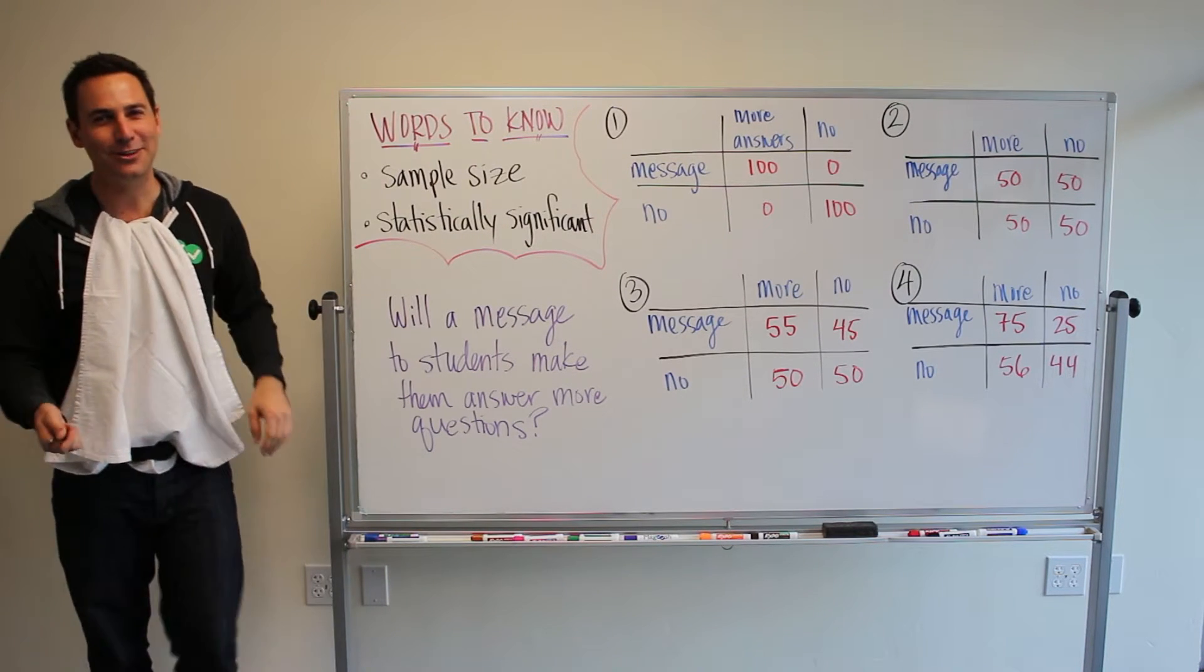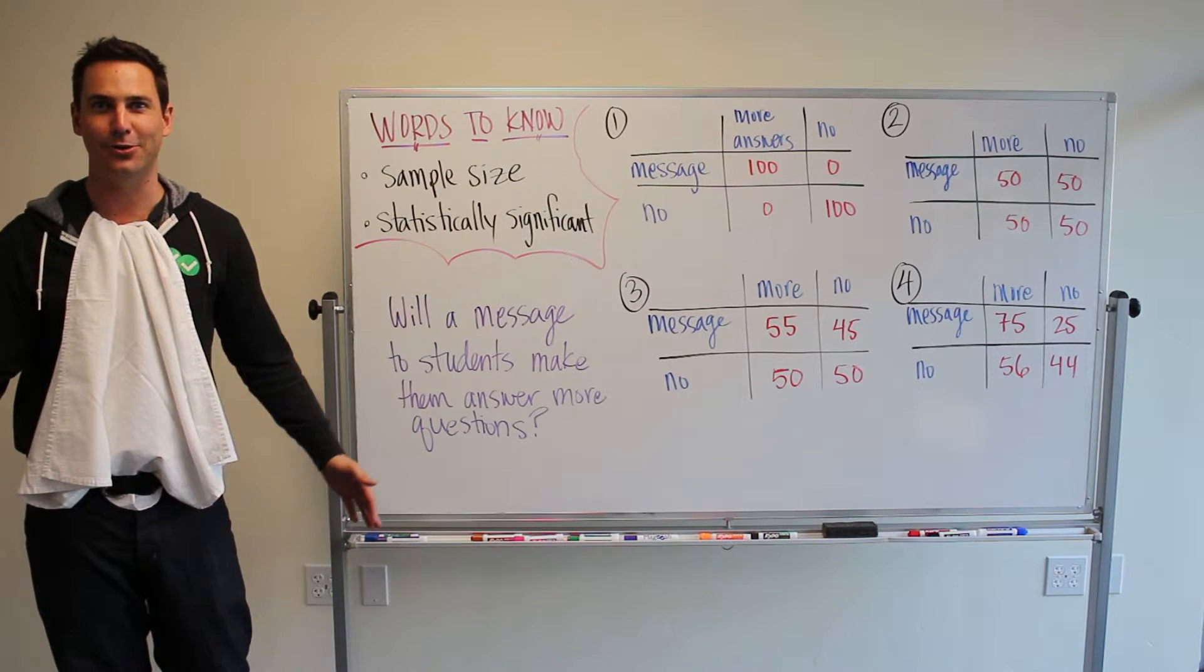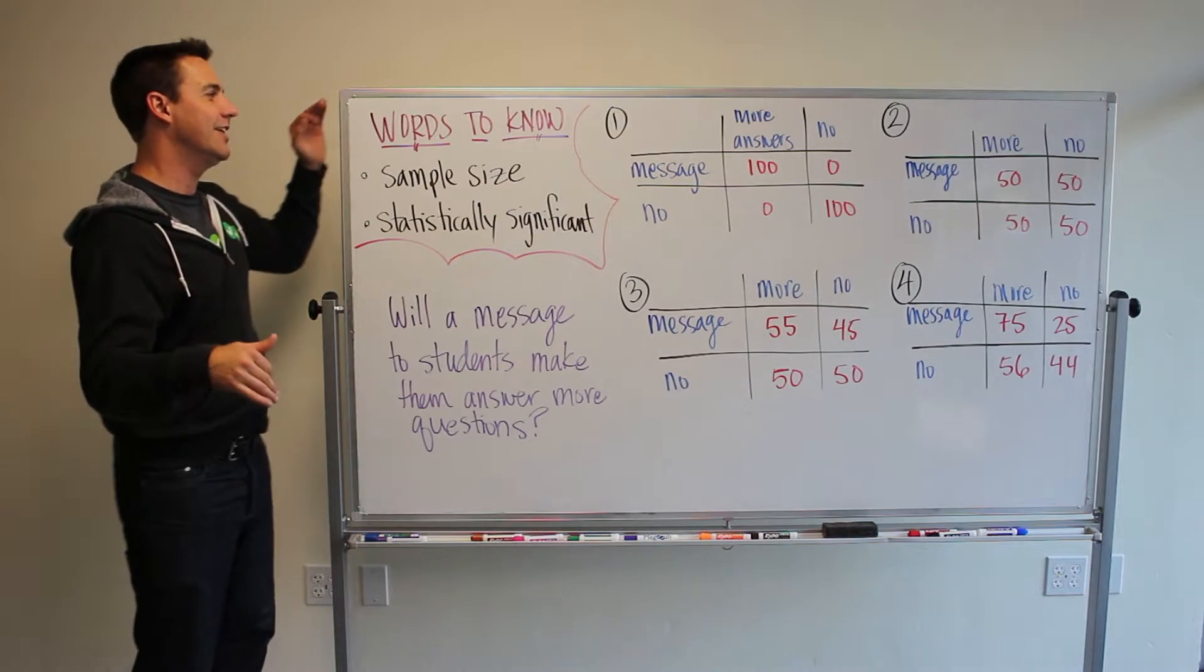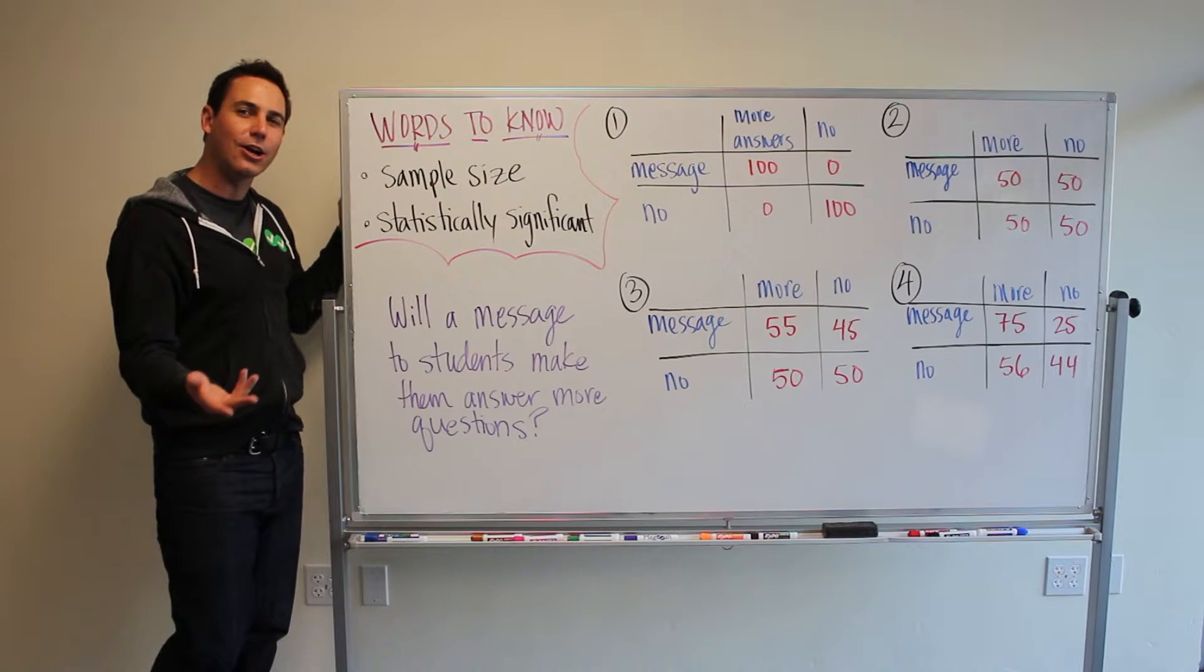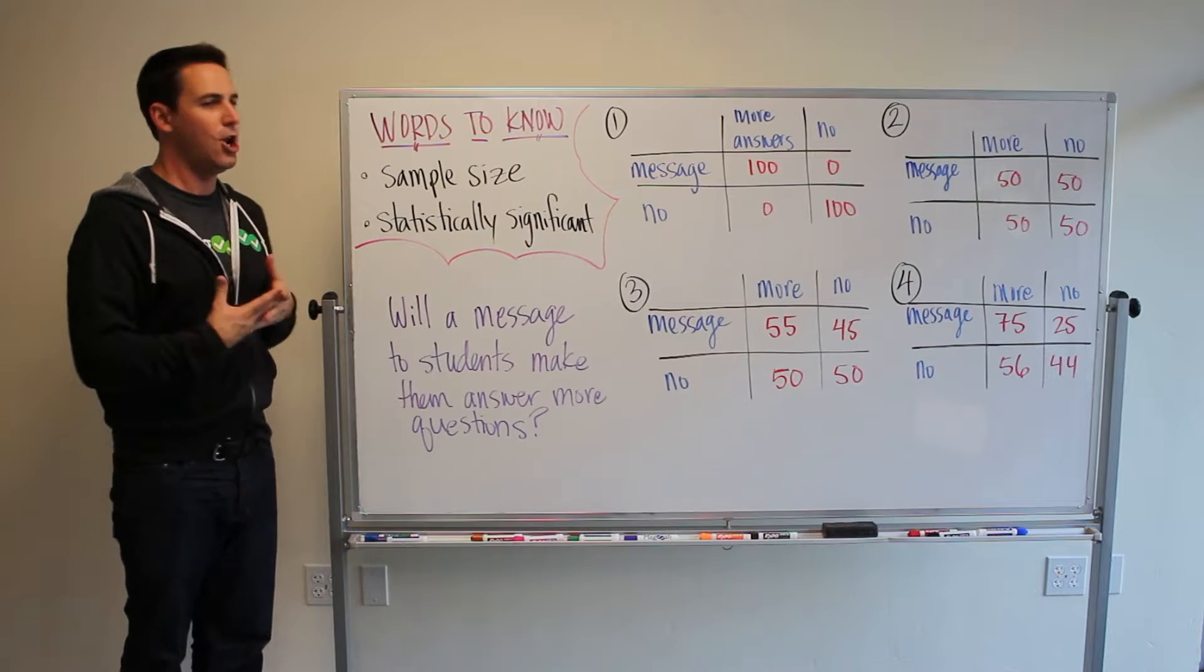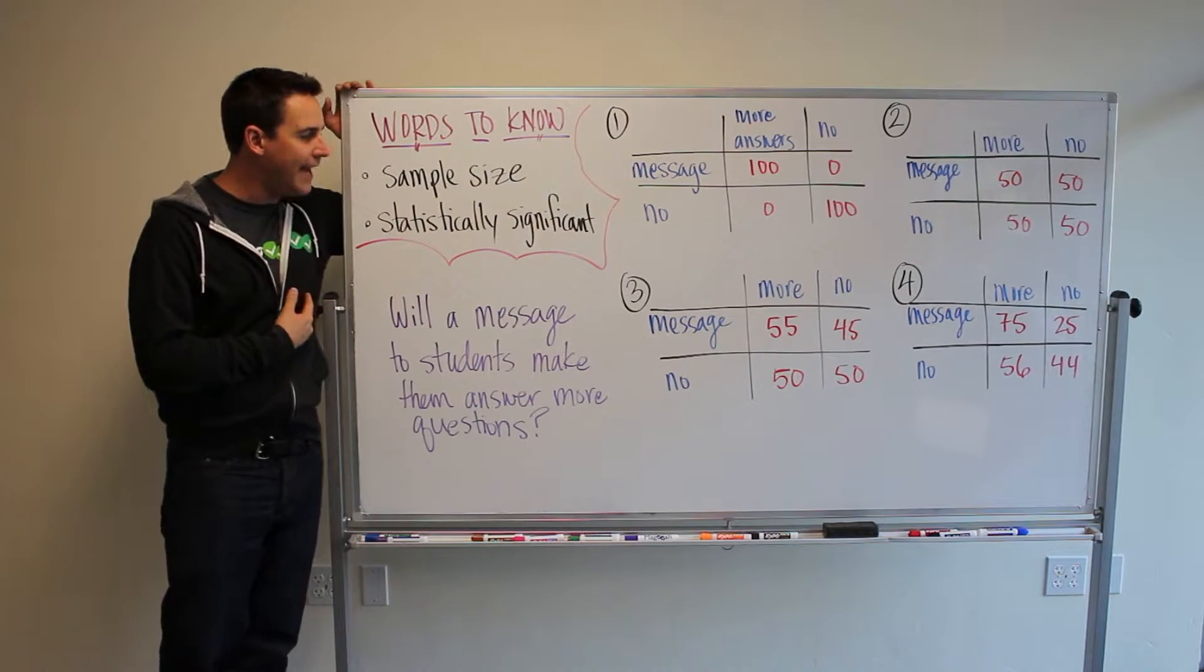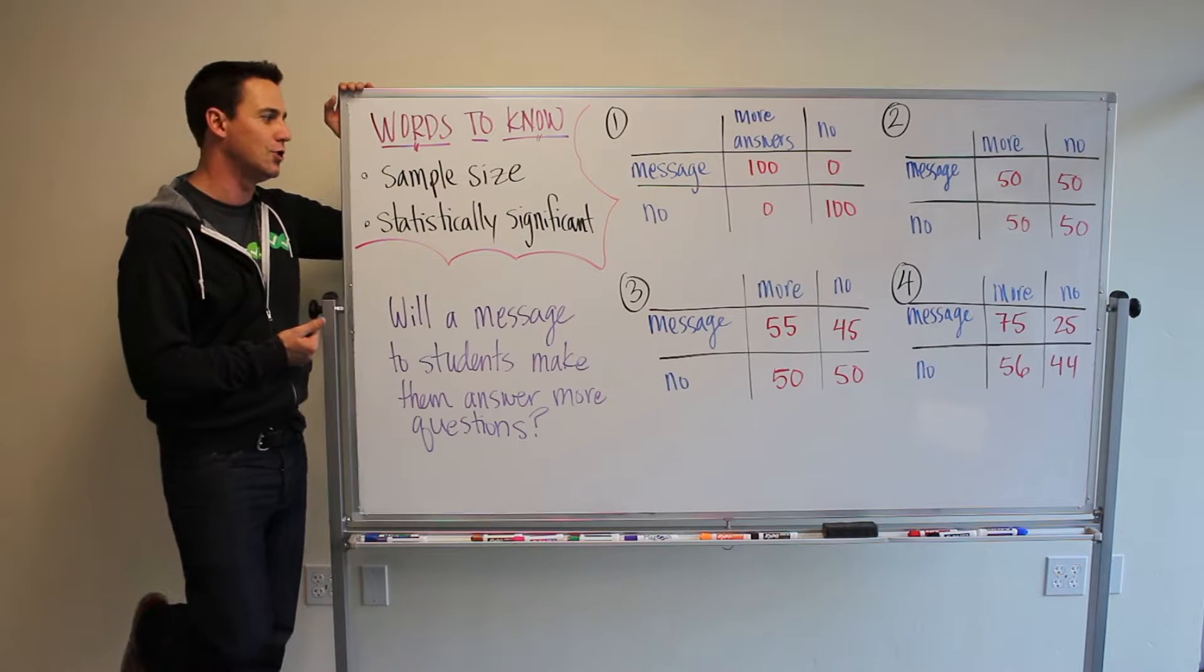Today we're talking about what matters in the real world. Real world matters. And again, this is not stuff that is tested on the GMAT. These are just concepts that if you know about them, it'll make reading comprehension and critical reasoning that much easier. So not tested, but knowing about them will help a lot. So today we're going to talk about sample size and statistically significant and what those two words mean.